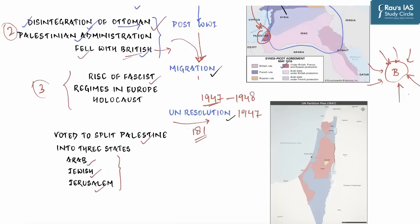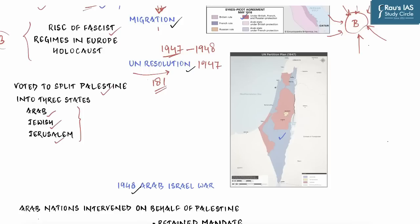After UN Resolution 181, the map of Palestine changed significantly. In the new map, blue denotes Jewish regions, pinkish-orange denotes Arab regions, and yellow represents the international city of Jerusalem. This was the condition starting 1948 — the first time boundaries were actually drawn in Palestine. Earlier, the entire Palestinian territory was owned and populated by Arabs, but after the resolution, it was trifurcated. Jews were given a large territory while Arabs were made limited to just the orangish areas.